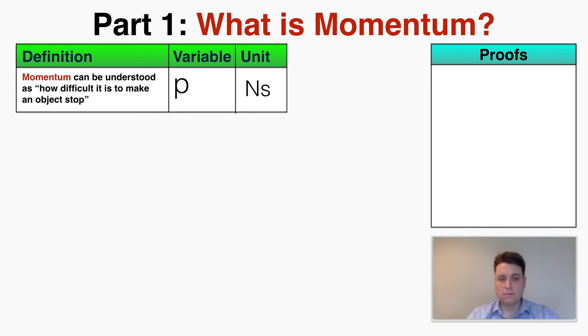Momentum can be understood as a measurement of how difficult it is to make an object stop. The variable for momentum is lowercase p and the unit is Newton seconds. I'll explain why that is in just a moment.